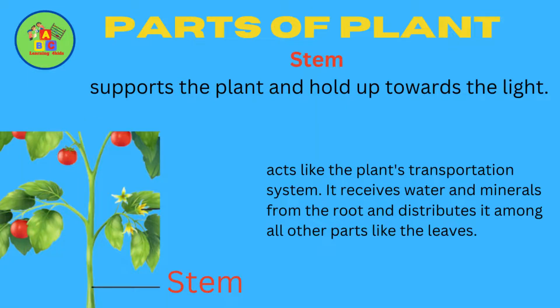Stem supports the plant and holds it up towards the light. It acts like the plant's transportation system. It receives water and minerals from the root and distributes it among all other parts like the leaves.